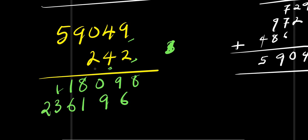Then multiplying by 2 again: 2 times 9 is 18, carry 1; 2 times 4 is 8 plus 1 is 9; 2 times 0 is 0; 2 times 9 is 18, carry 1; 2 times 5 is 10 plus 1 is 11.